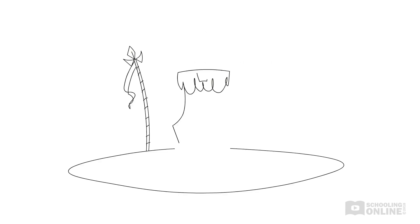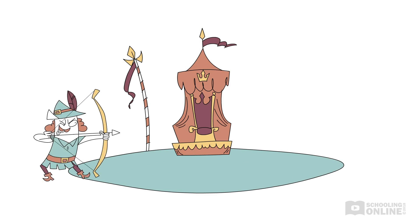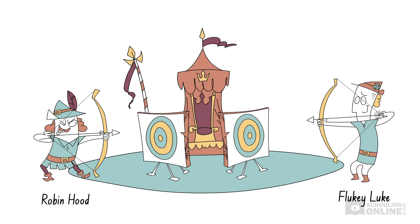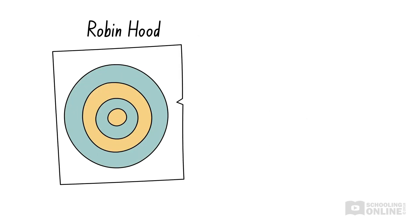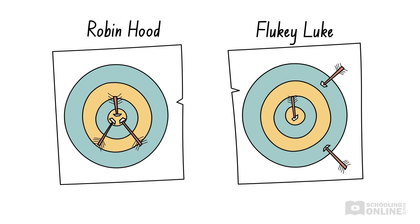To help us understand reliability, let's return to our archery competition. Robin Hood and his competitor, Fluky Luke, each have three arrows to fire at their targets. As usual, Robin Hood hits the bullseye with each of his three shots. Fluky Luke takes the stage and lands his first arrow in the bullseye. Is he as perfect as Robin Hood? Unfortunately not, because both of his following shots miss the target. It seems that Fluky Luke's first shot was just luck.